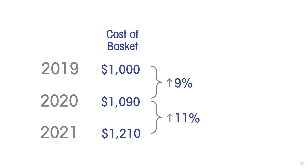The cost of the basket rose by 9% between 2019 and 2020 and by 11% between 2020 and 2021, so we have a measure of inflation. The popular measure of inflation is nothing more than the rising cost of purchasing the typical consumer basket, as captured by the consumption survey done by the country's statistical agency.